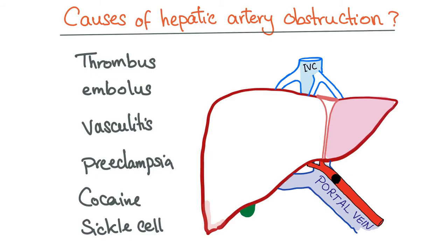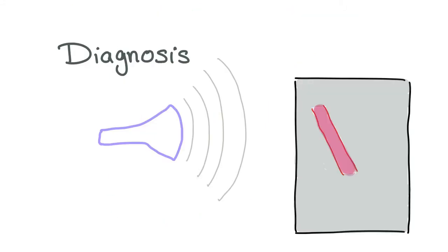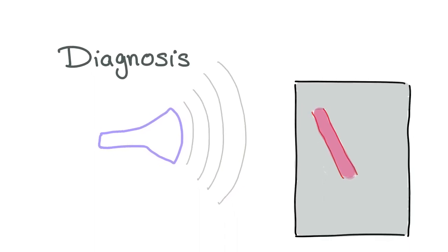Beyond thrombosis, the causes of hepatic artery obstruction in general include thrombosis, embolus, vasculitis, preeclampsia, cocaine abuse, and sickle cell anemia. To diagnose hepatic artery thrombosis, we typically use Doppler ultrasound followed by an arteriogram.